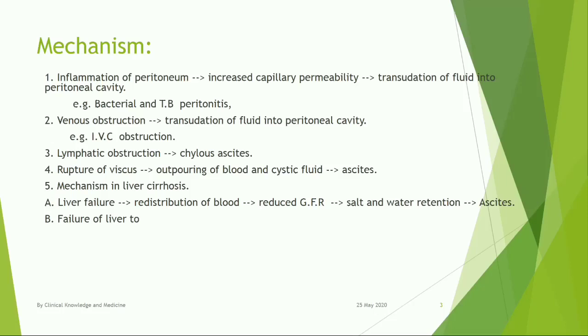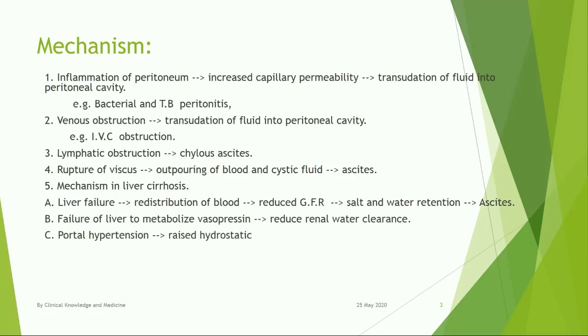Failure of the liver to metabolize vasopressin leads to reduced renal water clearance. Portal hypertension causes raised hydrostatic pressure and extravasation of fluid from plasma into the peritoneal cavity.